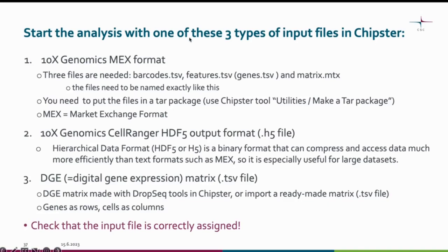Let's start with the input file options. You can start the analysis with one of three input files: either the 10x Genomics output files in a TAR package, or a HDF5 output file from the 10x Genomics Cell Ranger ending with .h5, or a digital gene expression matrix generated with DropSeq tools in Chipster, downloaded from GEO, or provided by a colleague.